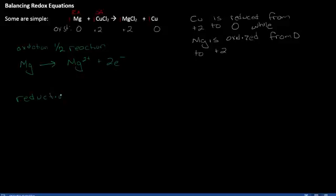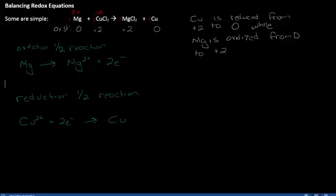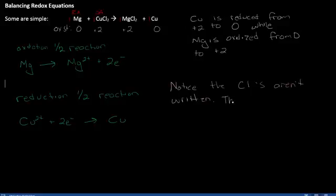What we do is pull out the oxidation half-reaction and the reduction half-reaction. Using this simple reaction shown here, I'll write the oxidation half-reaction: magnesium goes to magnesium two-plus, plus two electrons. Notice that this is both mass and charge balanced, meaning there's the same number of atoms on both sides, and the charges on either side of the equation are equal.